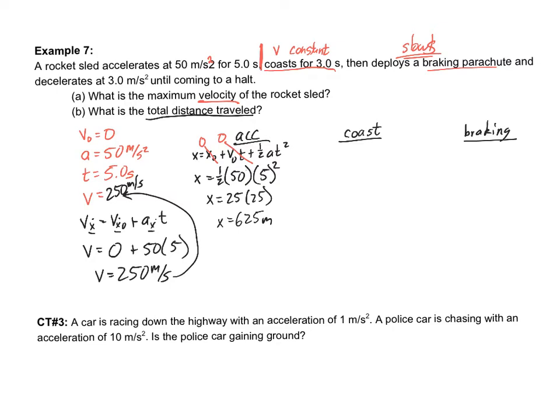Notice that the units work out. This 50 was in meters per second squared. The 5 was in seconds. It's going to be squared, meaning the seconds cancel out, leaving me with meters. Now, during the coasting, that should be pretty easy because we know that distance equals speed times time. So we're going to get our distance, which is equal to our speed at that point, which was 250 times the amount of time. And so 250 times 3, we got another 750 meters there.